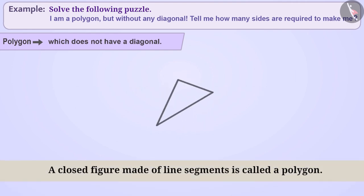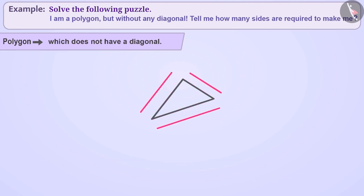As you know, a polygon is a closed figure made of line segments. The line segments from which the polygon is made are called sides of the polygon. You also know that at least three sides are compulsory to form a polygon.